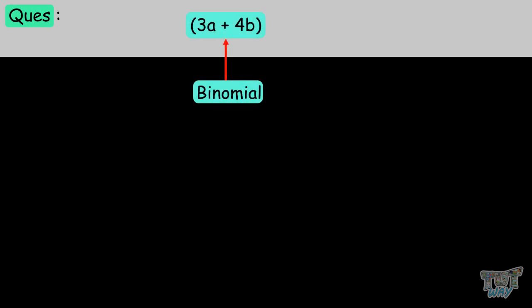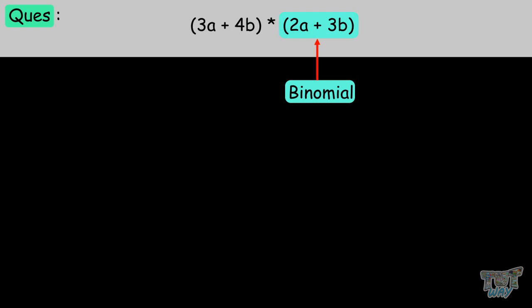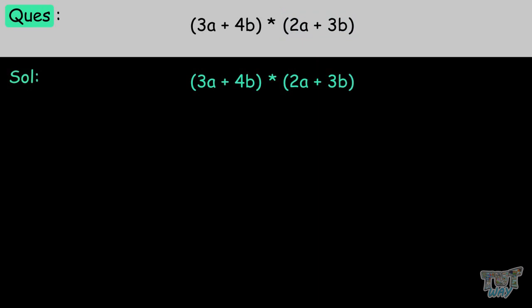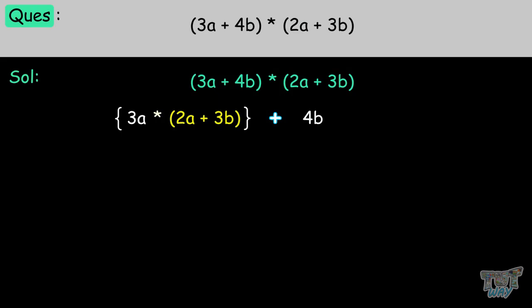Here is the first example: 3A plus 4B, a binomial — an expression with two terms — multiplied with 2A plus 3B, which is another binomial. What we have to do is take any one binomial out of the two. Let's take 3A plus 4B, and then we multiply 2A plus 3B with both. So we get 3A times (2A plus 3B) plus 4B times (2A plus 3B), with brackets included throughout.